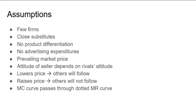The kinked demand curve hypothesis of price rigidity is based on the following assumptions. One is that there are few firms in the industry. The product produced by one firm is a close substitute for the other firms. The products are of the same quality and there is no product differentiation. There are no advertising expenditures.